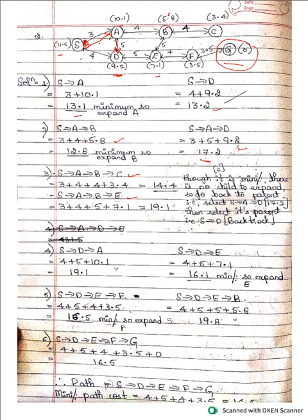From B you can reach C and from A→D you reach E. For S→A→B→C: 3 + 4 + 4 + h(C) 3.4 = 14.4. For S→A→D→E: 3 + 5 + 5 + h(E) 7.1 = 20.1. Wait — comparing held paths, S→A→D to E gives 19.1 and S→A→B→C gives 14.4. Minimum is 14.4.